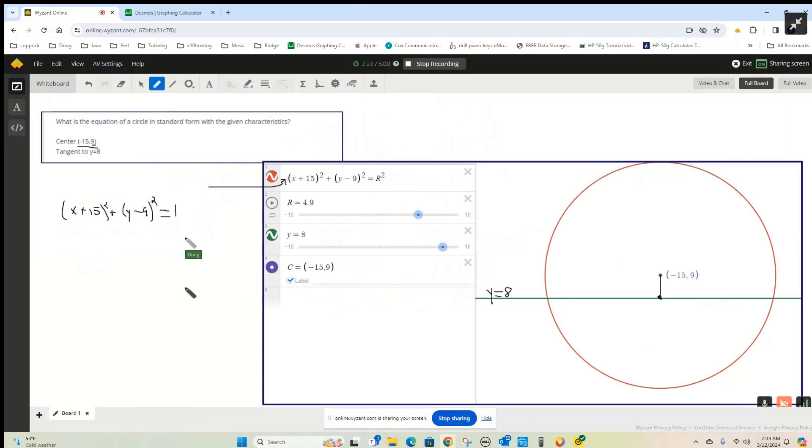Now, some textbooks, this is center-radius form. Again, some textbooks call that standard form. Some textbooks square these binomials and combine the constant terms to get what they call standard form.